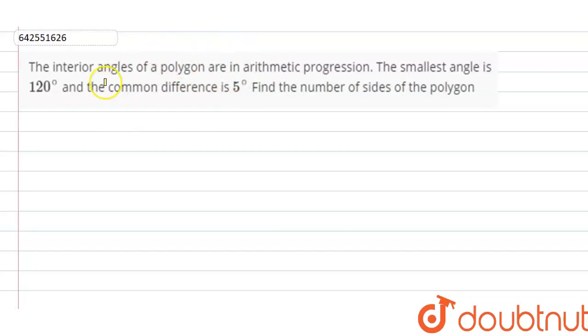The smallest angle is 120 degrees and the common difference is 5 degrees, and the angles are in AP. First of all, we have to calculate the number of sides of the polygon. Let there be n sides in the polygon.